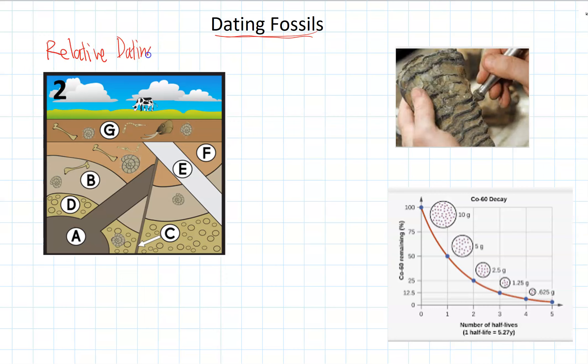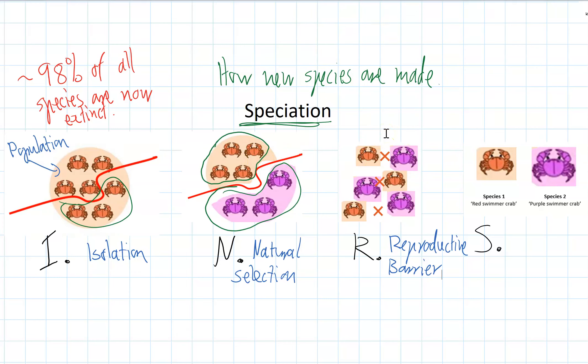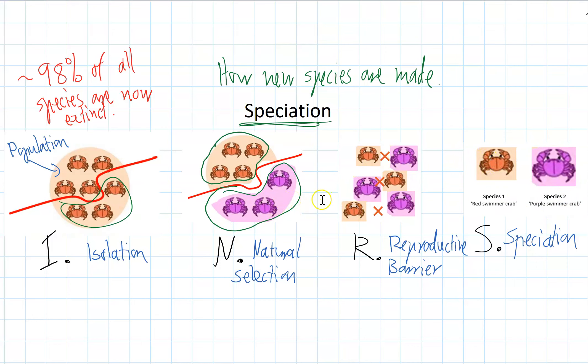Once enough natural selection happens, the most important thing is a reproductive barrier is made. This means something has evolved so that the different populations can no longer breed — maybe they don't recognise each other, physically can't mate, or mate at different times of the year. As soon as there's a reproductive barrier, we say these have become different species. S stands for speciation — species 1 is still the red swimmer crab, but species 2 is now called something new, like the purple swimmer crab.